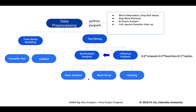For our data, we used Python and PySpark for data preprocessing. The data preprocessing procedure included word tokenization, stop word removal, bigram analysis, and we also removed some special characters and links. We also built a time series model for Nike stock price to include our sentiment score, and we conducted text mining to learn more information about tweet contents, using influential users to conduct sentiment analysis.